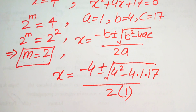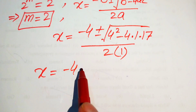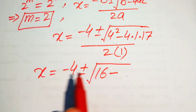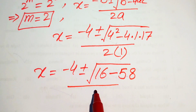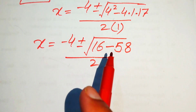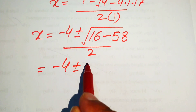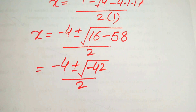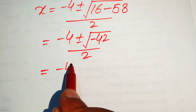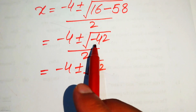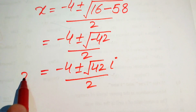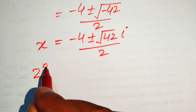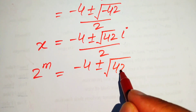Substituting the values, we get x equals minus 4 plus or minus square root of 16 minus 68, divided by 2. Simplifying inside the root gives minus 52, so x equals minus 4 plus or minus square root of 42 times iota, divided by 2, since the square root of minus 1 is iota. These are the two complex values of x.